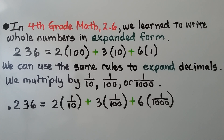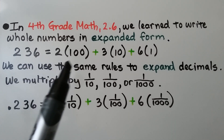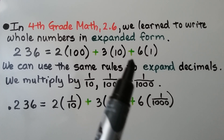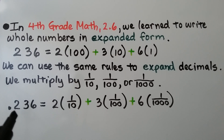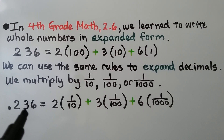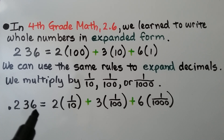In fourth grade math 2.6, we learned to write whole numbers in expanded form: two hundred thirty-six equals two times one hundred, plus three times ten, plus six times one. We can use the same rules to expand decimals, multiplying by one-tenth, one-hundredth, or one-thousandth instead. So two hundred thirty-six thousandths is two times one-tenth, plus three times one-hundredth, plus six times one-thousandth.